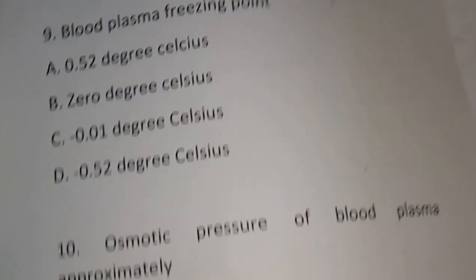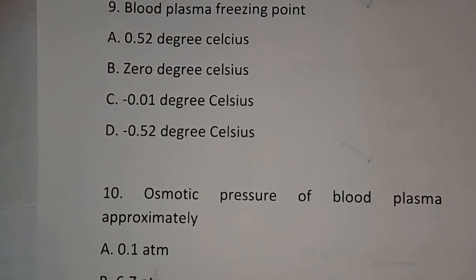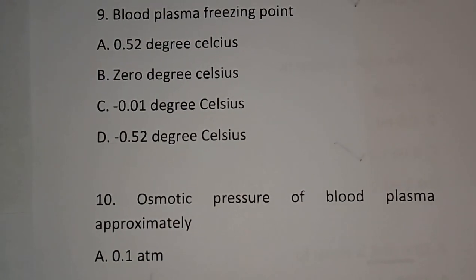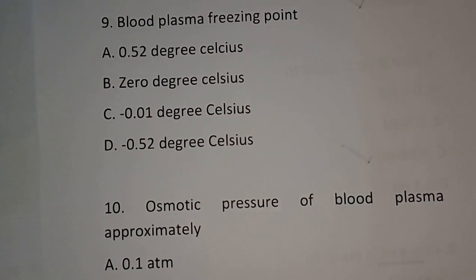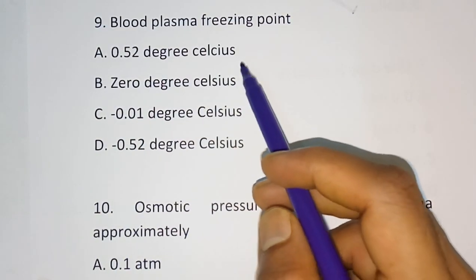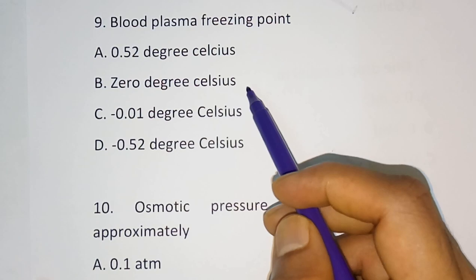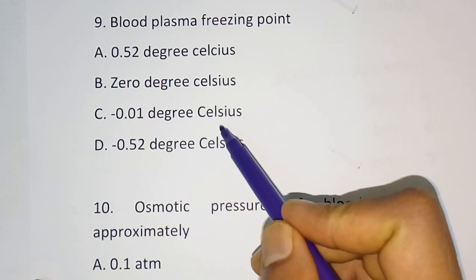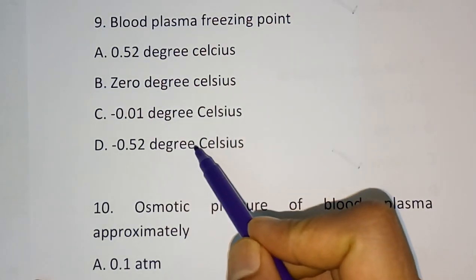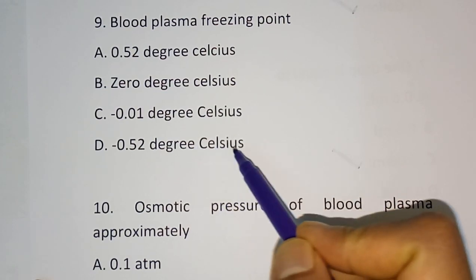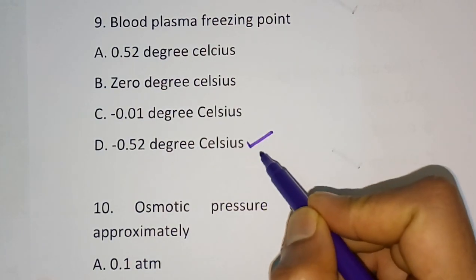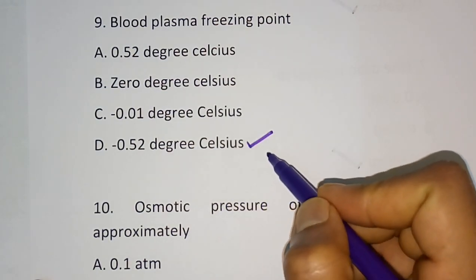Question number 9: What is the blood plasma freezing point? Options are 0.52°C, 0°C, minus 0.01°C, and minus 0.52°C. The correct answer is option D — minus 0.52 degrees Celsius.